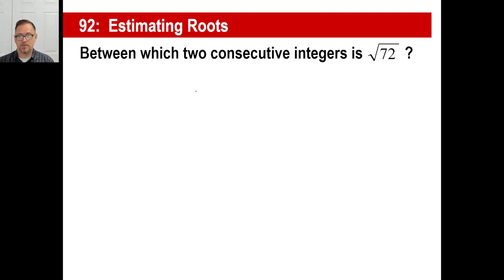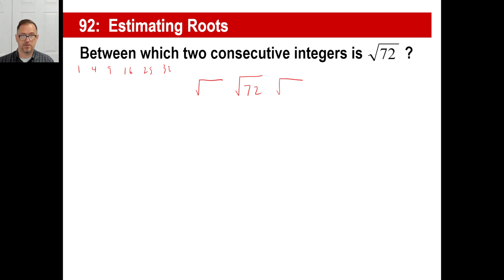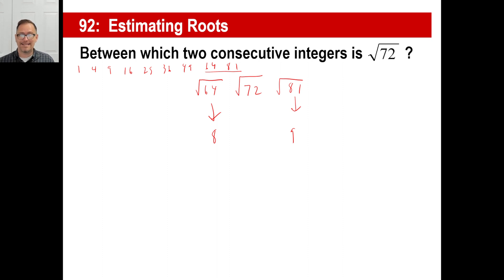You need to find perfect squares around 72. What numbers are perfect squares? 1×1=1, 2×2=4, 3×3=9, 4×4=16, 5×5=25, 6×6=36, 7×7=49, 8×8=64, 9×9=81. You see 64 and 81. So the square root of 64 is 8 and the square root of 81 is 9. Therefore the square root of 72 is somewhere between 8 and 9 — it's not a perfect integer answer, but between the consecutive integers 8 and 9.